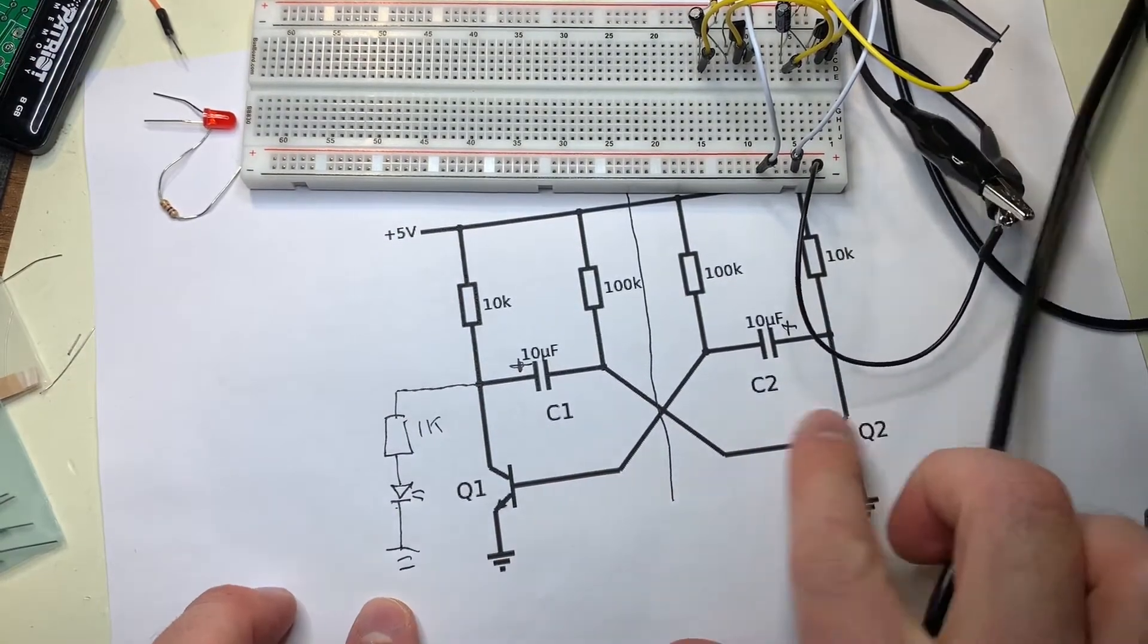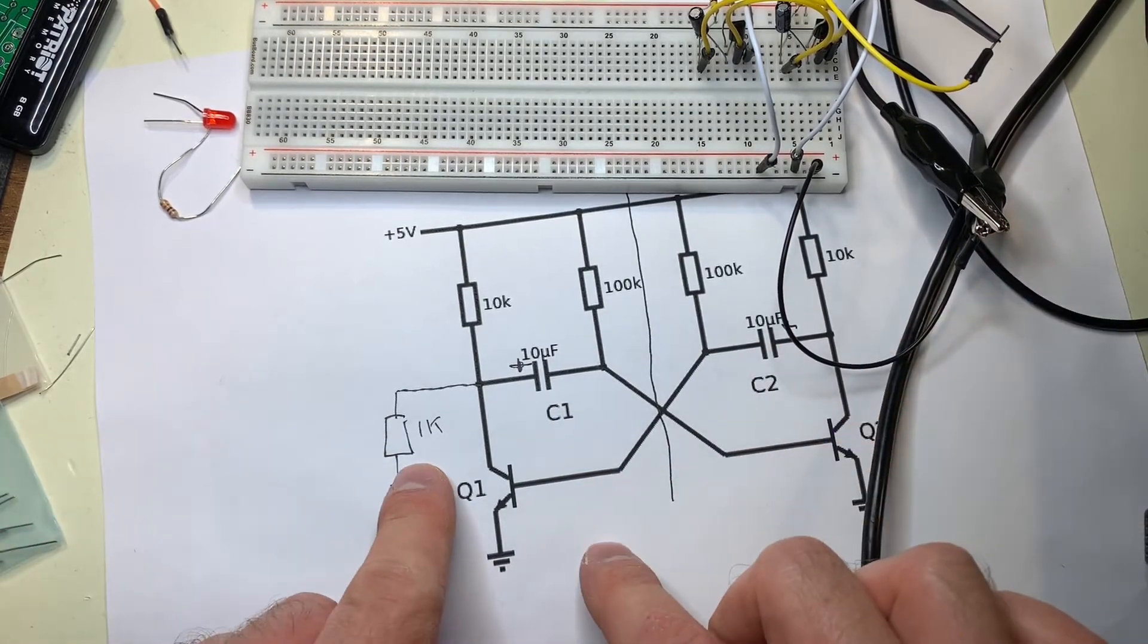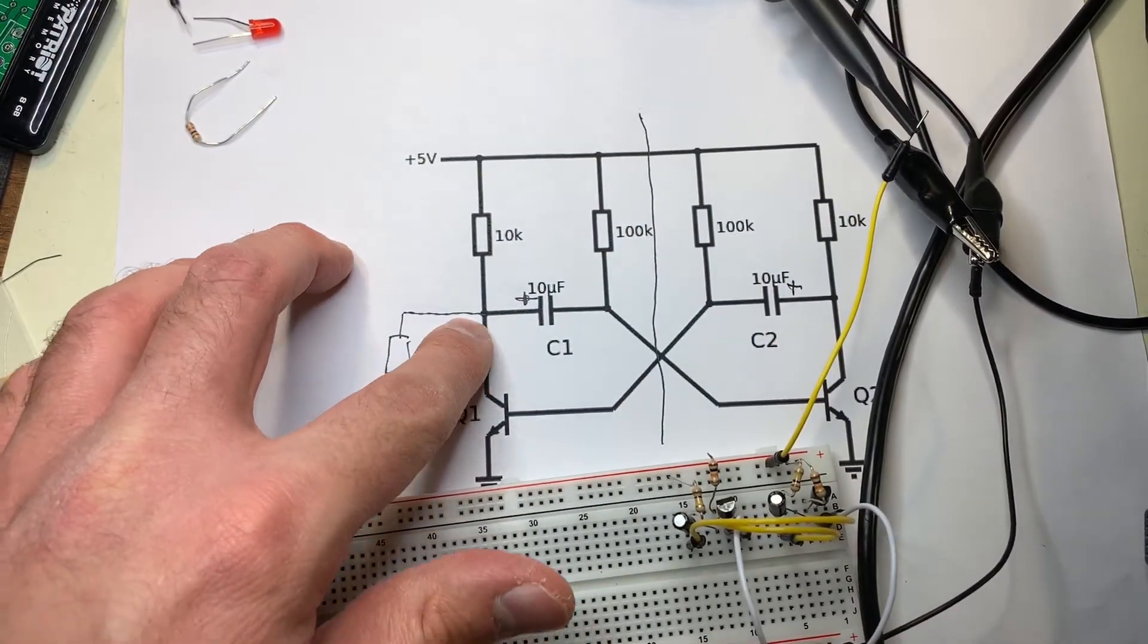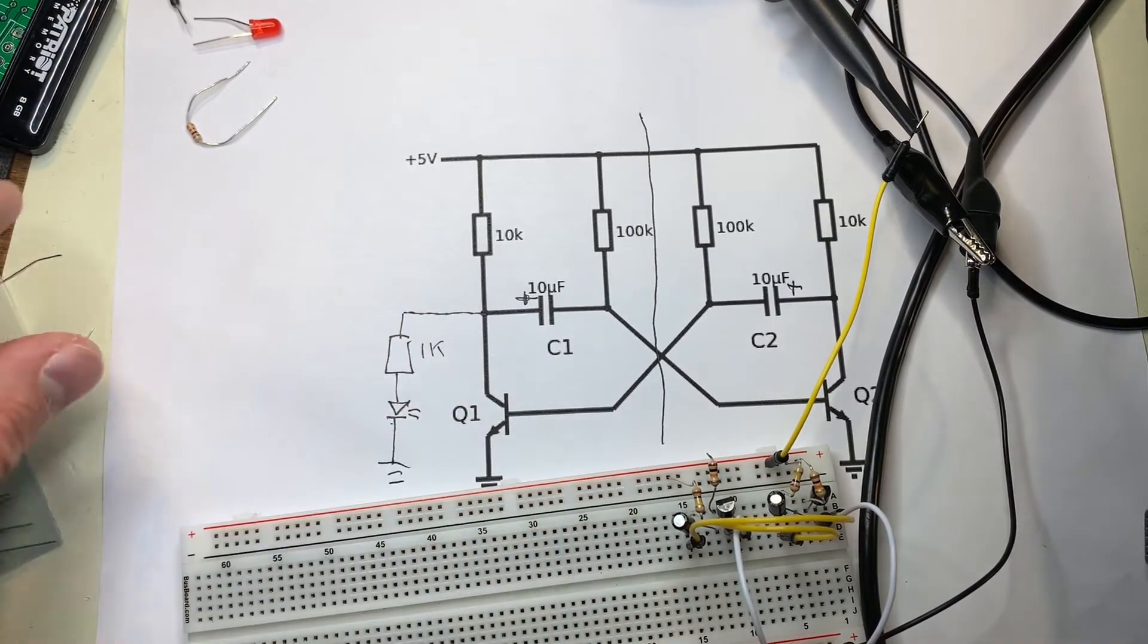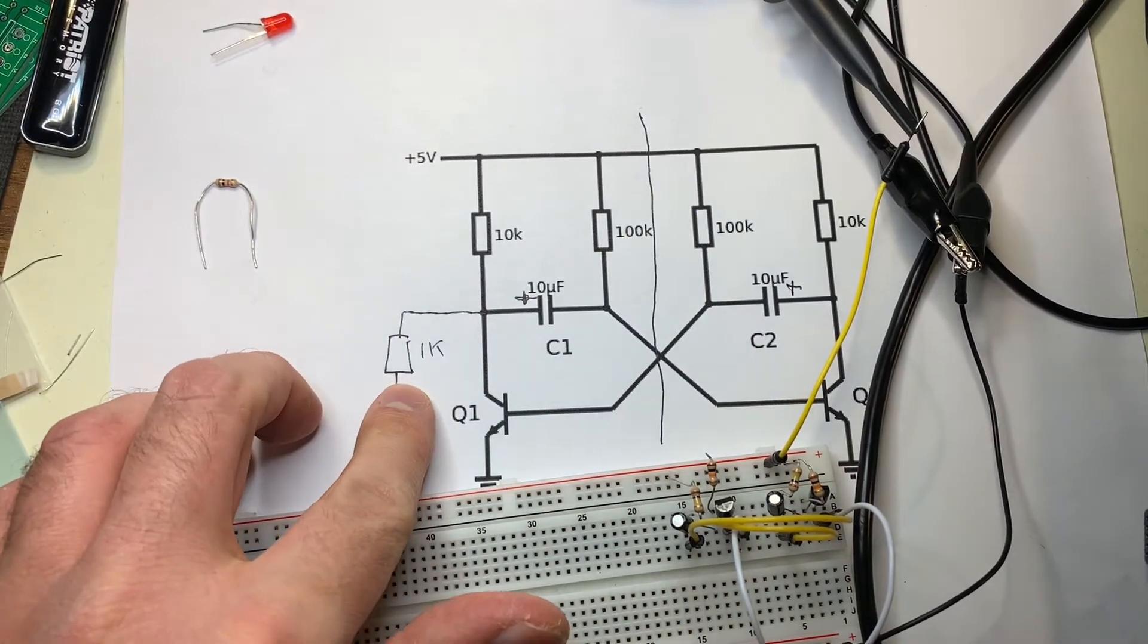So we have 1K going to LED and then to ground. So it doesn't matter what side of the circuit this is on, but just for this video, I'm putting it on this side. So this shared rail between the resistor, the capacitor, and the collector of this transistor here, is going to be going to this resistor here.